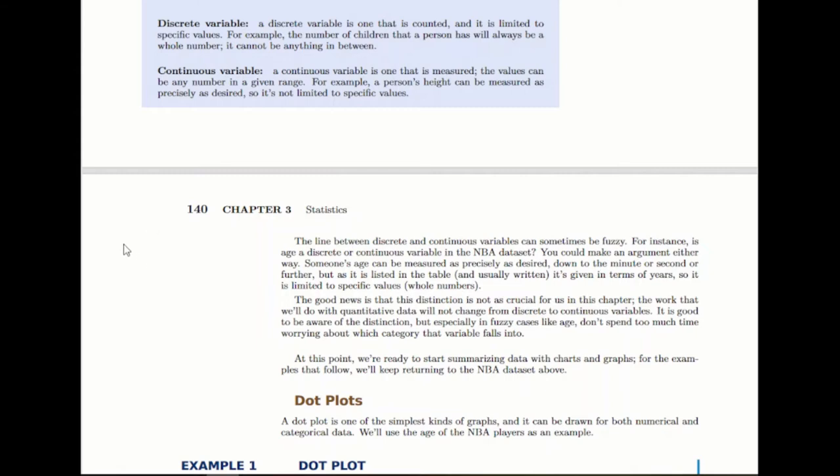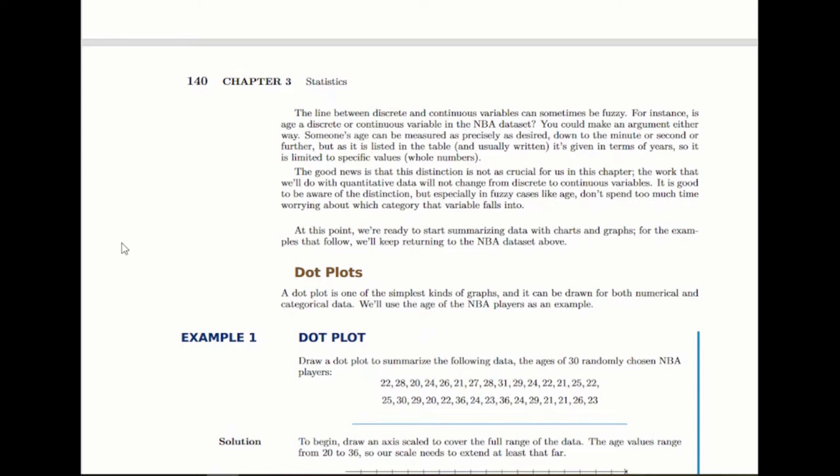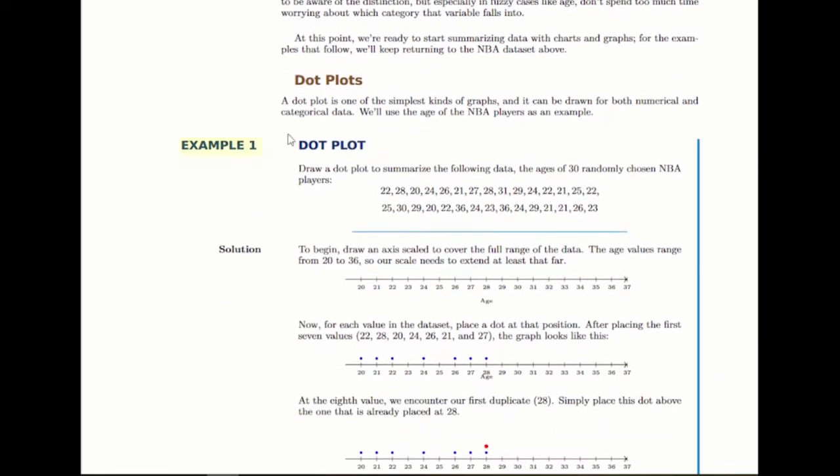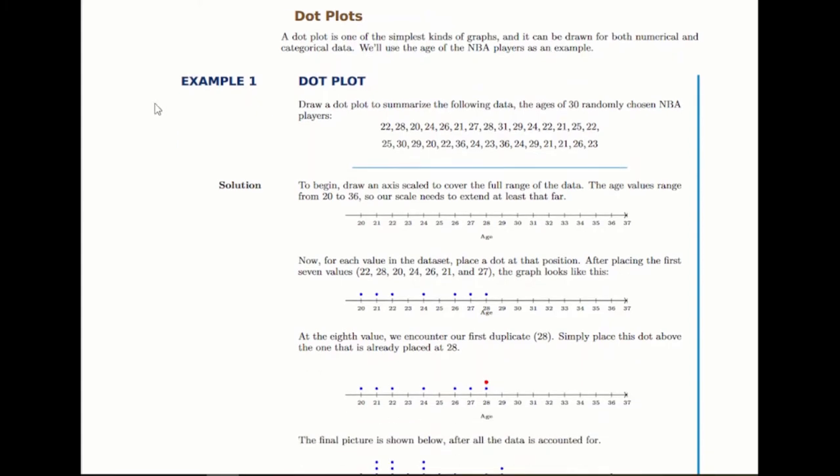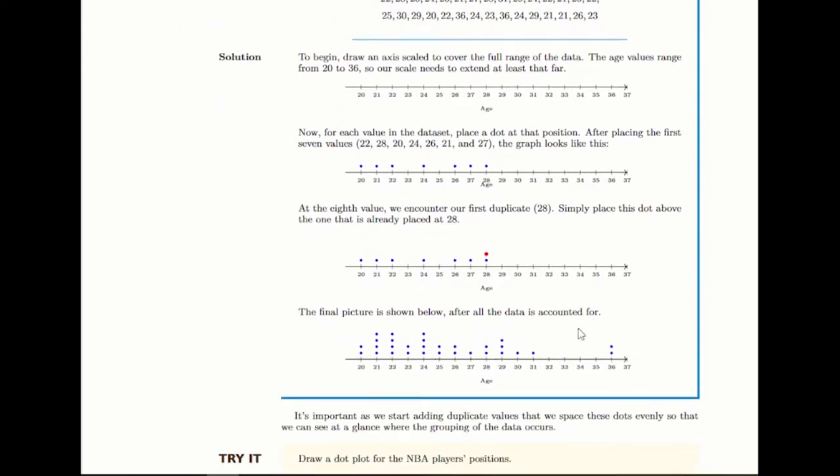As you go through this section, there will be a variety of types of graphs. Some apply to both numerical and categorical data, some to one or the other. Dot plots work for both. The basic idea is you have your scale, and then you start putting dots to represent each value. If we're summarizing their ages, we put their ages along this scale, and at the end, we have this dot plot.